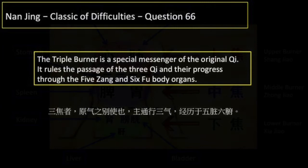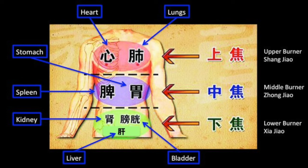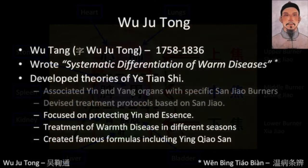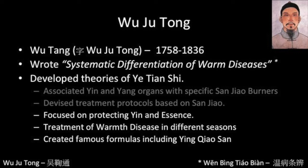Wu Zhutong associated the heart, pericardium, and lungs with the upper jiao; the spleen and stomach together with the small and large intestines with the middle jiao; and the liver, kidneys, and bladder with the lower jiao. He used this as the basis for warm disease differentiation and determination of appropriate treatment. His treatment also focused on the preservation of essence, whose loss he saw as one of the underlying causes of warmth disease. He derived a number of formulas which are popular to this day, including Yin Qiao San.